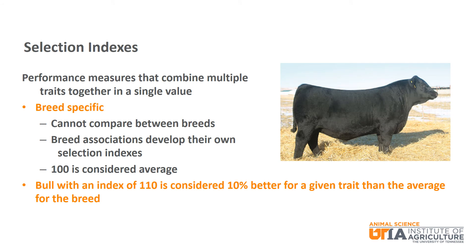Next we will spend a few minutes discussing selection indexes. Selection indexes are performance measures that combine multiple traits together in a single value. They are breed specific, meaning that you cannot compare between breeds, and each individual breed association develops their own indexes. 100 is considered average for a given index; thus a bull with an index of 110 is considered 10% better for a given trait than the average for that breed.